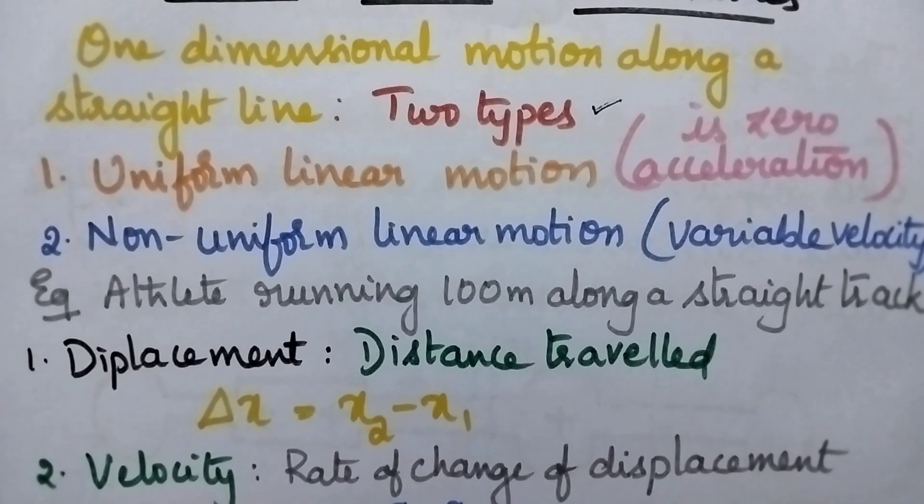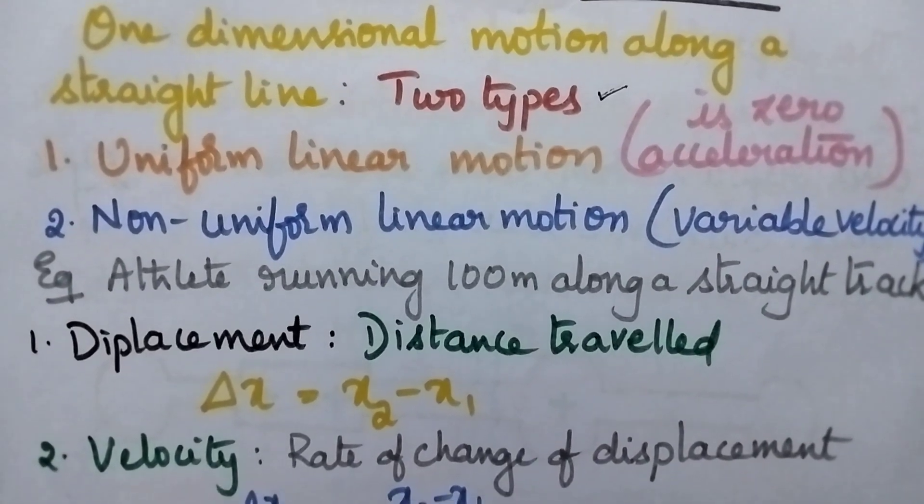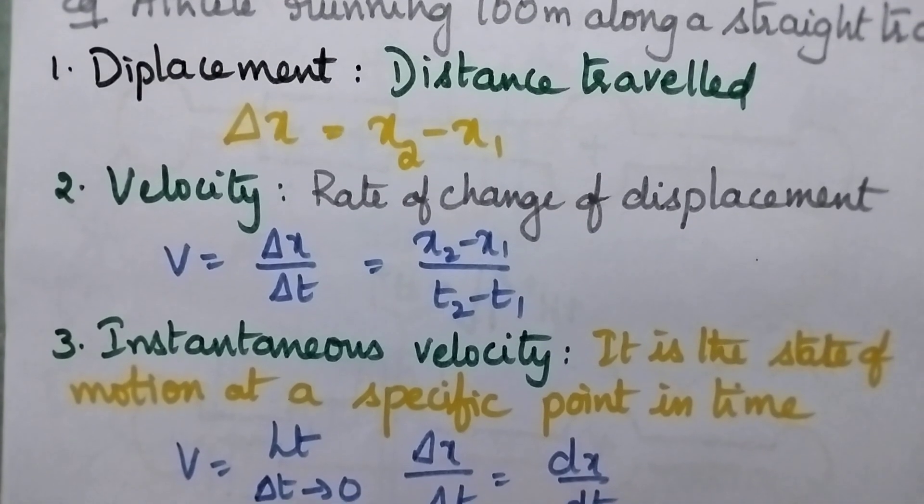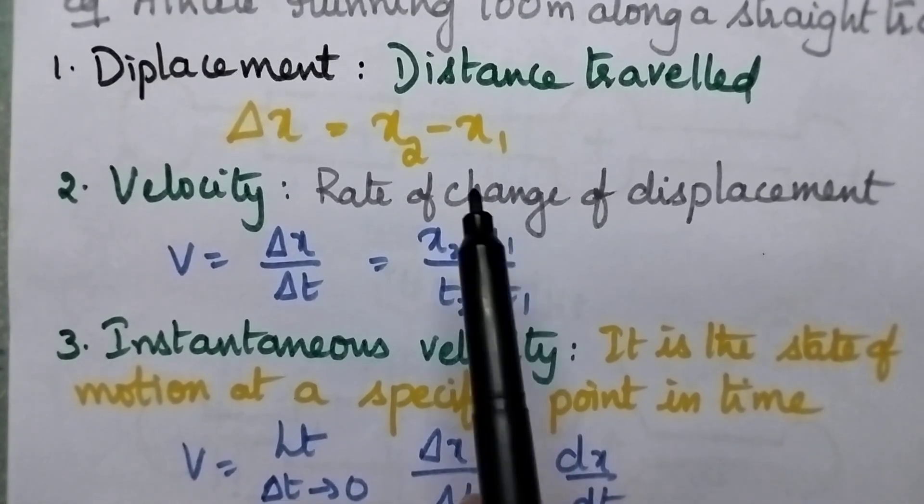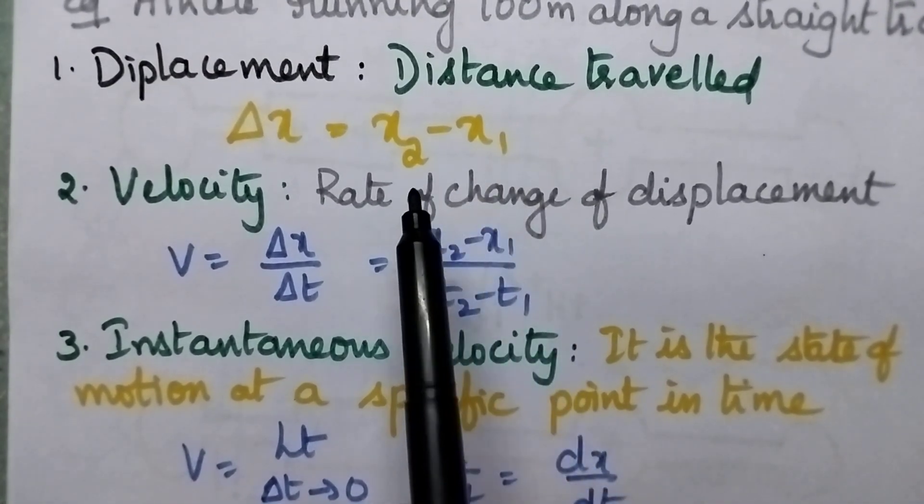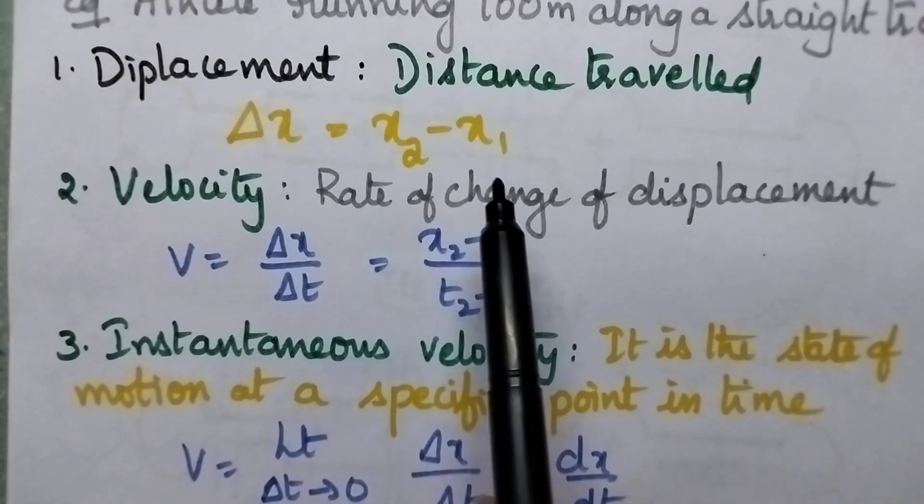Coming to the displacement, displacement is nothing but the distance traveled by the athlete. So, that is delta x is equal to x2 minus x1. x2 means final position, x1 is the initial position.